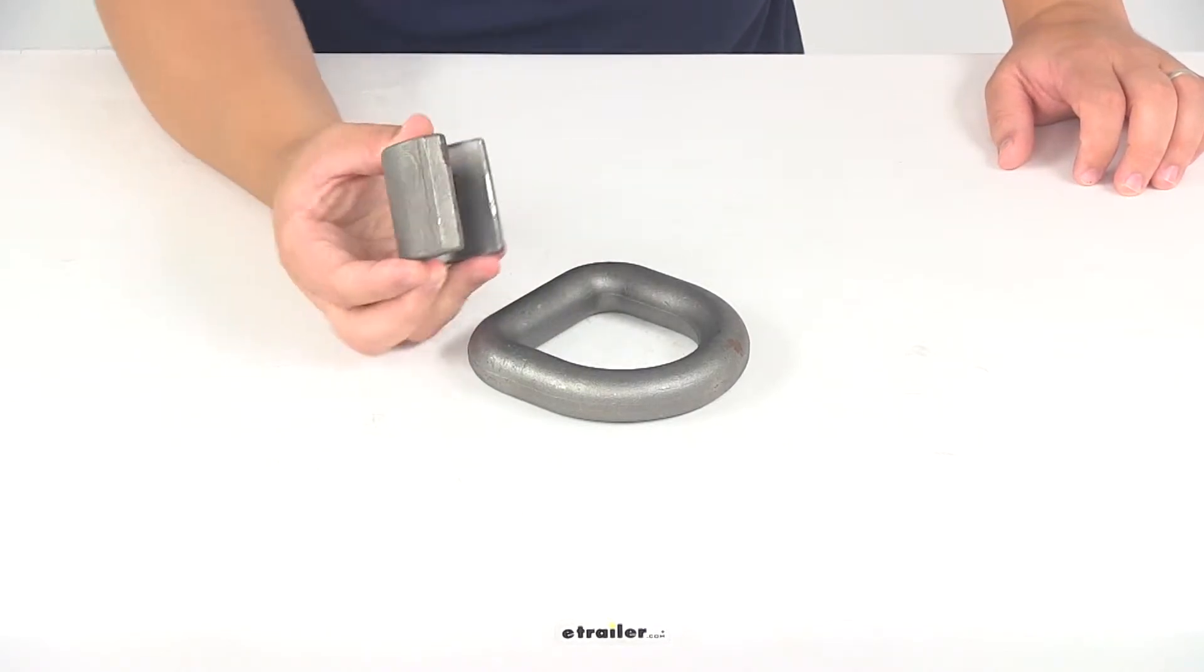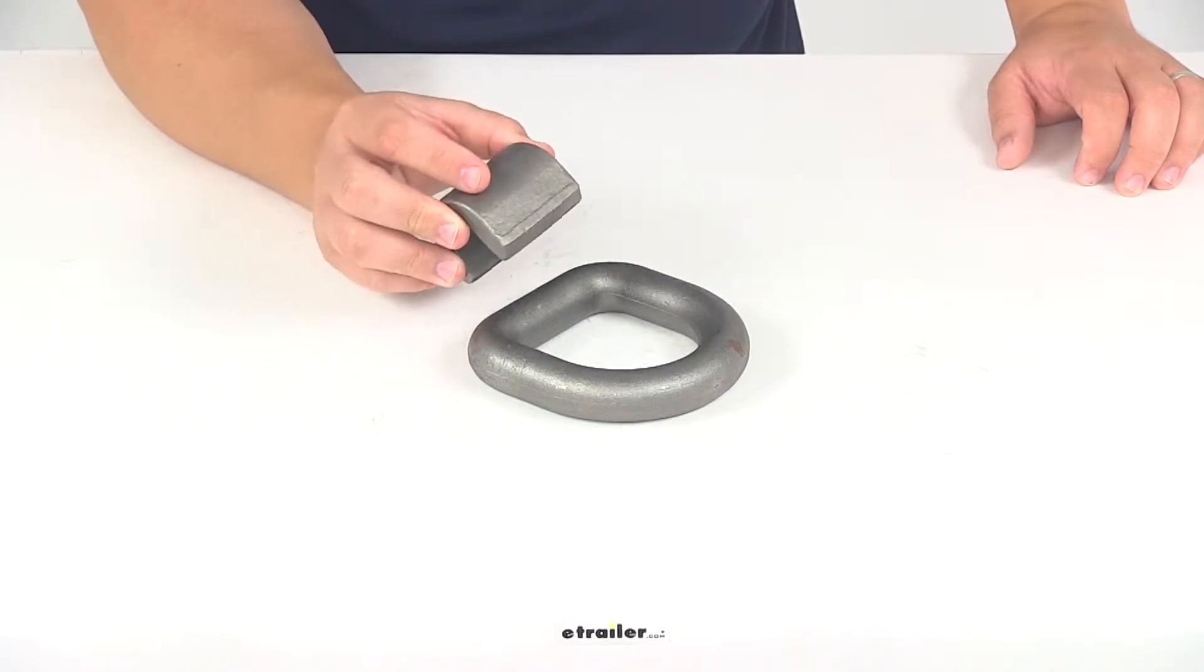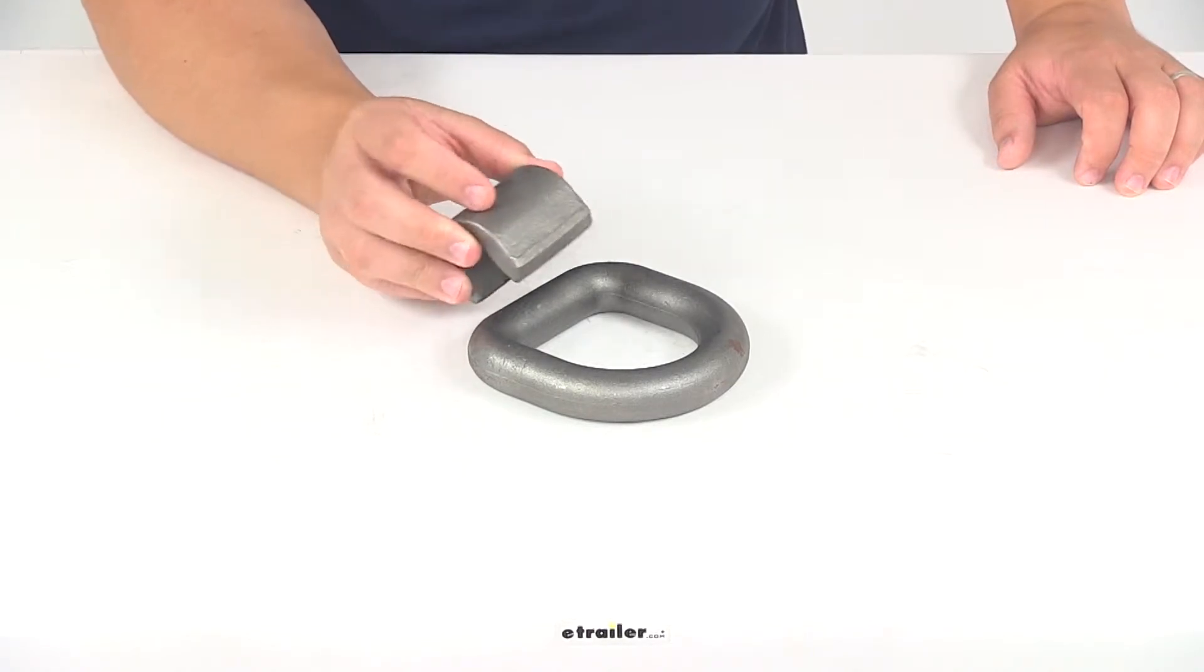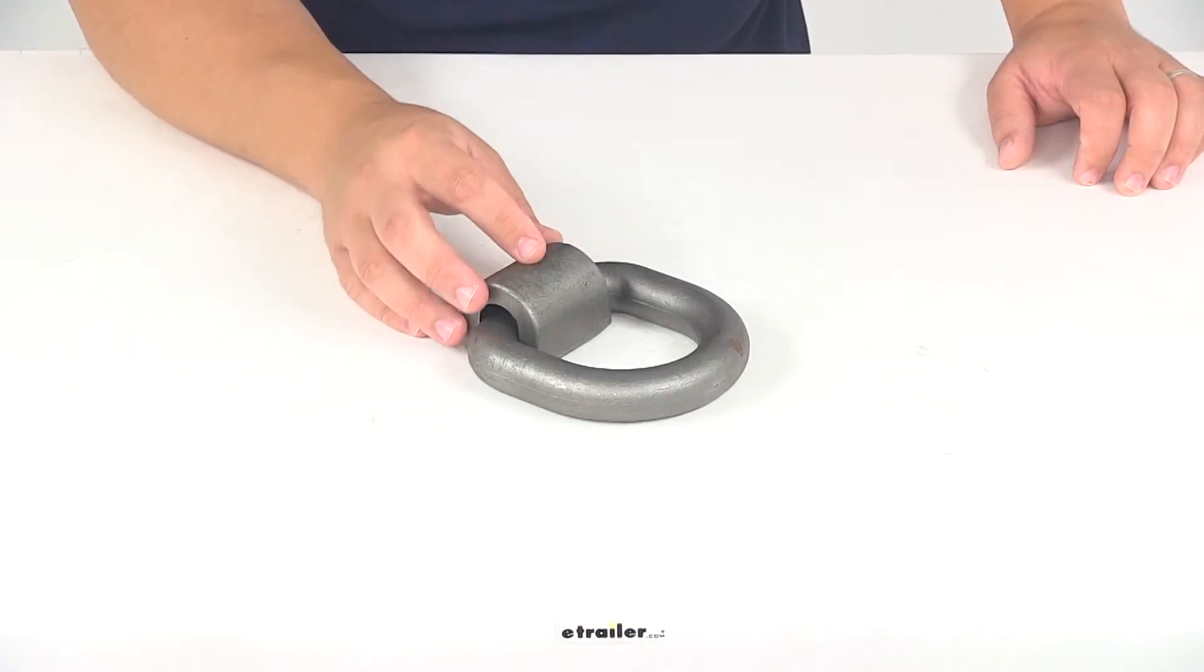The mounting bracket is included. This is a weld-on installation. Everything you see here is made from forged steel construction with a raw steel finish. The maximum load or brake strength for this unit is 46,760 pounds.